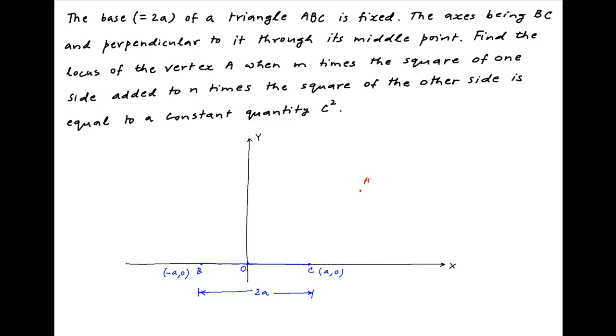Let's assume that the coordinates of the vertex A are (h, k). Join point B to point A and point C to point A to complete triangle ABC.